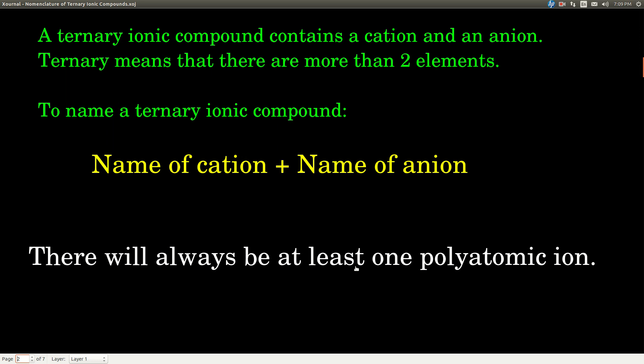Ionic still means that there's a cation and an anion, and as before, the cation is always written first in both the formula and the name, and the anion is always written last in both the formula and the name. So to name a ternary ionic compound, we name it the same way we do with a binary ionic compound. Just say the name of the cation and then say the name of the anion.